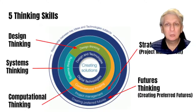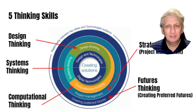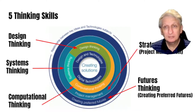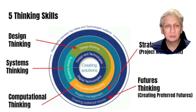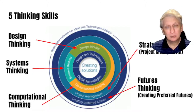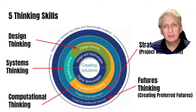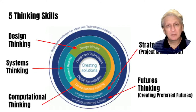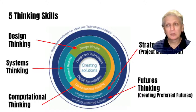Within the Australian curriculum digital technologies, we have five main thinking skills: computational thinking, which is the main focus; systems thinking; design thinking, which is the main focus of the design and technology curriculum but also incorporated into digital technologies; strategic thinking; and futures thinking — or 'creating preferred futures' — which supports students in considering what may occur in the future through various approaches and techniques.